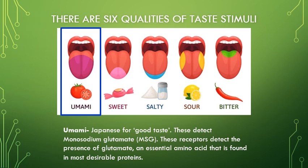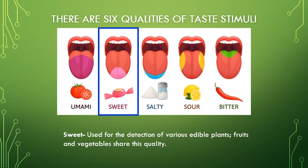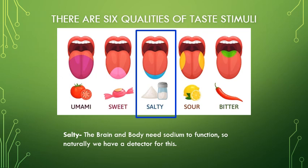The first quality is umami, which detects monosodium glutamate or MSG — an essential amino acid found in protein-rich foods like meats. The second is sweet, which evolved to detect fruits and edible plants with high energy content. The third is salty: we detect sodium because our brains use it in action potentials and our bodies need it for homeostasis.